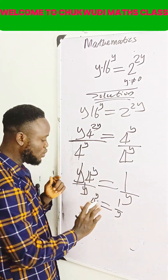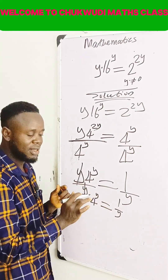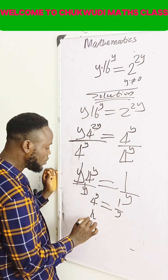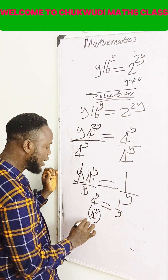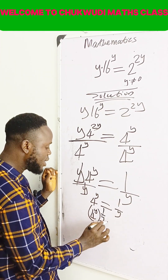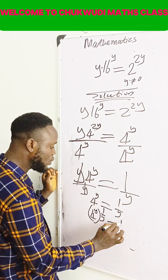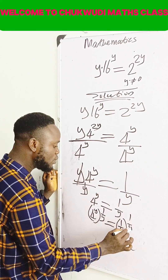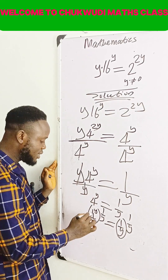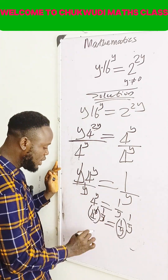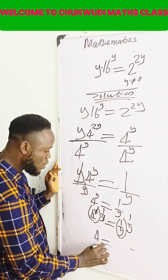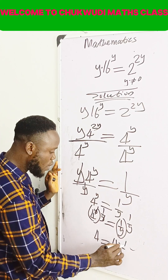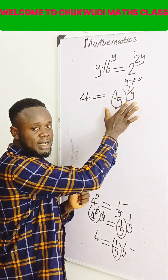The next thing is to make sure that y is not here, and I can only achieve that by raising 4 raised to the power y to the power of 1 over y. If you do that here, do that also to the right hand side — raise this to 1 over y. By doing that, y will divide y, and the only thing left is 4 is equal to 1 over y raised to the power 1 over y.